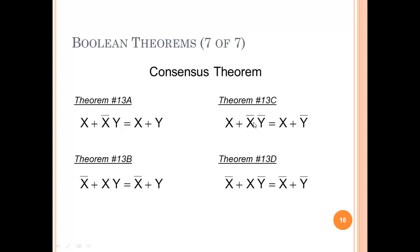Same thing here. X OR NOT X AND NOT Y becomes X OR NOT Y. So here's another variation of the consensus theorem. NOT X OR X AND Y becomes NOT X OR Y. NOT X OR X AND NOT Y becomes NOT X OR NOT Y.